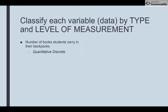In terms of the level of measurement, I need to think about what does zero mean. If I say I have zero books in the backpack, does that mean none? If zero implies none, then I'm at the ratio level.